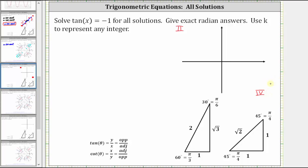For the next step, we ignore the negative and find the reference angle that gives a tangent function value of positive one. Having a tangent value of positive one reminds us of a 45-45-90 reference triangle, where tangent theta equals the opposite side over the adjacent side, so tangent of π/4 radians equals one divided by one, which is one. So we sketch a reference angle of π/4 radians in the second and fourth quadrants.